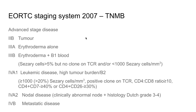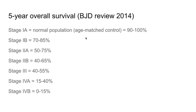Staging provides important prognostication information. Stage 1A has a prognosis similar to the normal population with five-year overall survival rates of 90 to 100 percent, whereas stage 4B — metastatic disease — has a five-year survival rate of only 0 to 15 percent.